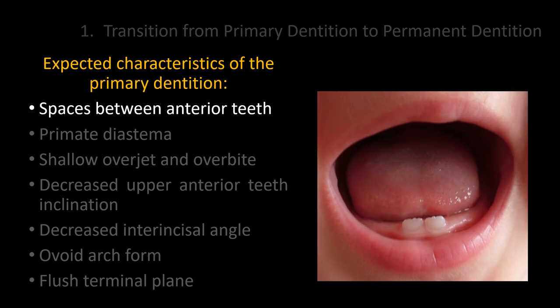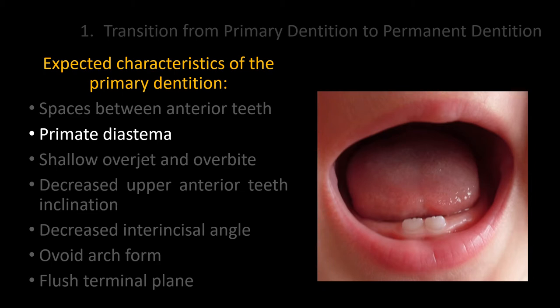It is important to know the characteristics of the normally developing primary dentition to understand the transition to permanent dentition. The presence of diastema between incisors in the primary dentition is necessary to provide enough space for permanent incisor eruption. The primate or anthropoid diastema is located distal to the upper laterals and distal to the lower canines. These spaces are inherited genetically from our ancestors and are located opposite each of the four canine teeth, providing room during lateral jaw movements.